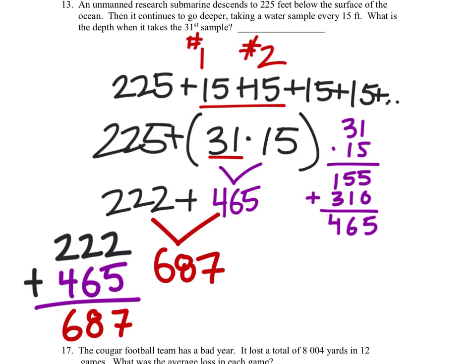So what is the depth when it takes the 31st sample? Looks like it will be 687 feet below the surface, which is acceptable if you put a negative on this. And that would be fine because it is below the surface. So either one of those would work. Thank you very much.